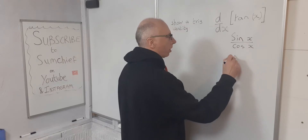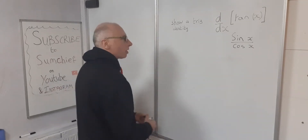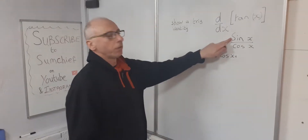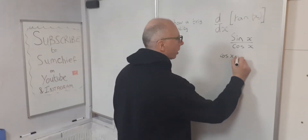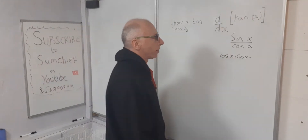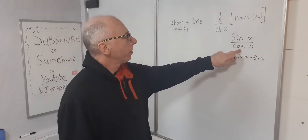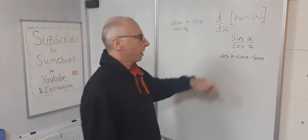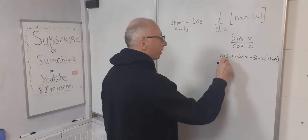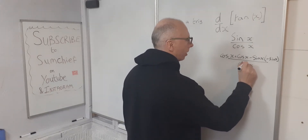So we end up with cosine x times the derivative of sine x, which is also cosine of x. Subtract that from sine of x times the derivative of cosine of x, which is negative sine of x. And then divide all that by the denominator squared, which is cosine of x squared.